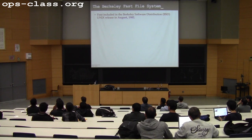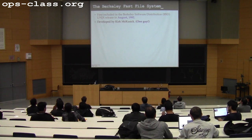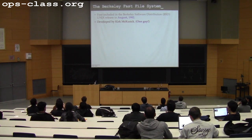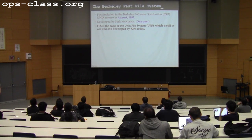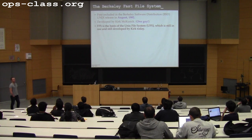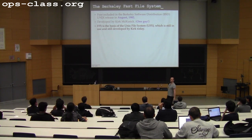David Holland, for example, is a BSD person — he grumbles whenever you get him to use something that smells like Linux. The Fast File System was developed and continues to be developed by Kurt McKusick — one person wrote this file system, which is pretty cool. It's now called UFS, the Unix File System, and Kurt is still working on this project with ongoing releases.